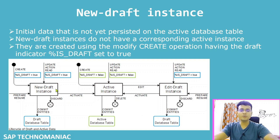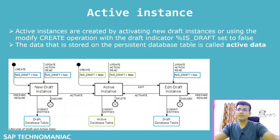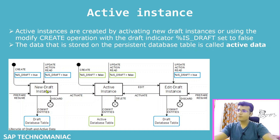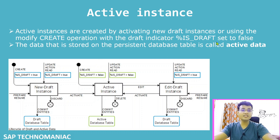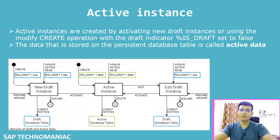Now let's discuss the active instance in more detail. As mentioned, the active instance can be created from the new draft instance, from the edit draft instance, or if you use the modify create statement with is_draft equal to false, it can be created directly. On commit work — or using the commit entities EML statement, or from OData service or front end during the save sequence — this active instance data is always saved on the active database table.